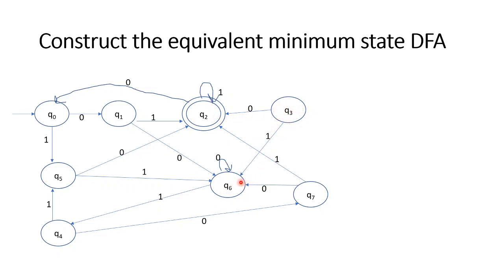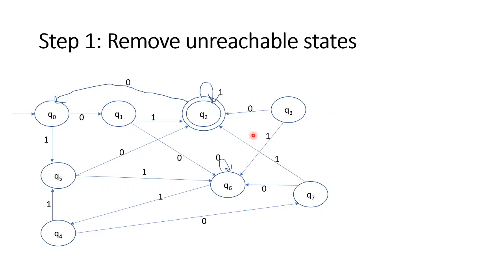The two arrows are the same. We can reach Q0, Q2, Q6, Q7, Q3 — you can see there is no arrow pointing into Q3 from outside. Which means Q3 is the unreachable state. So let's remove Q3. Remove the unreachable state — Q3 is unreachable, so I am going to remove Q3.